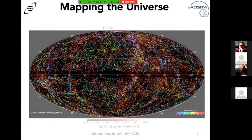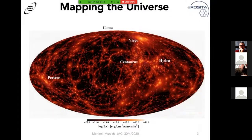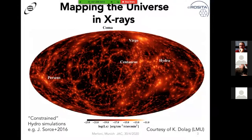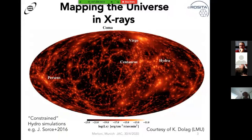People have done so-called constrained simulations — this is a hydro simulation created by Klaus Dolag at LMU. Because you have your computer local density structure, you can turn on your X-ray eyes. This is a computer view of how the local large-scale structure would look like in X-rays. The knots and filaments, where most of the mass and baryons concentrate because they turn very hot due to large virial shocks, shine bright in X-rays. One motivation for building eROSITA was to turn this computer vision into reality.